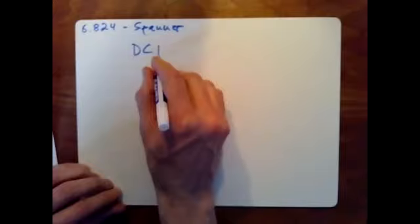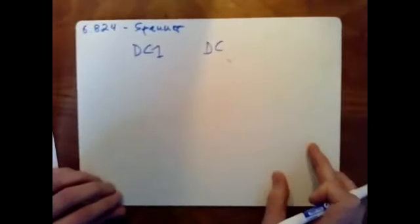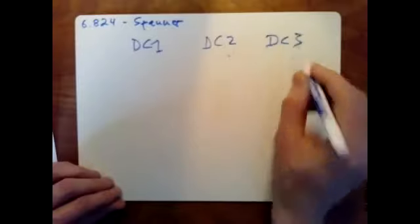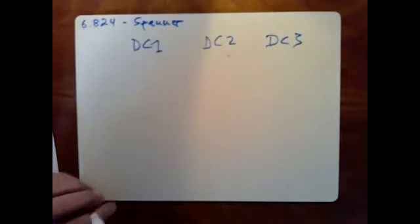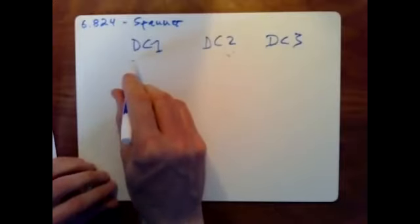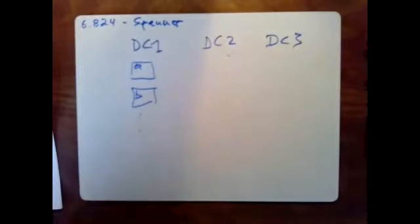I want to draw the basic physical arrangement of Spanner's servers. Servers are spread over data centers, presumably all over the world. Each piece of data is replicated at multiple data centers. Let's say there are three data centers — really there'd be many more. The data is sharded, broken up by key and split over many servers. So maybe there's one server that serves keys starting with A in one data center, others starting with B, and so forth — lots of sharding over lots of servers.